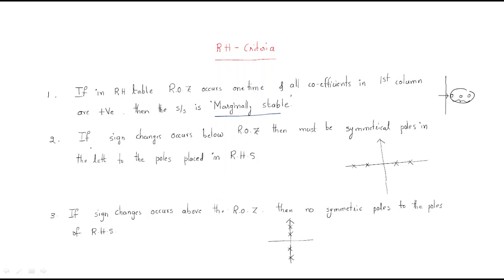The second point: if any sign changes occur below the row of zeros, then there must be symmetrical poles — equal numbers of poles on the left-hand side and right-hand side. For example, if below the ROZ we see a negative sign in the first column, then there must be symmetric poles arranged on both sides.